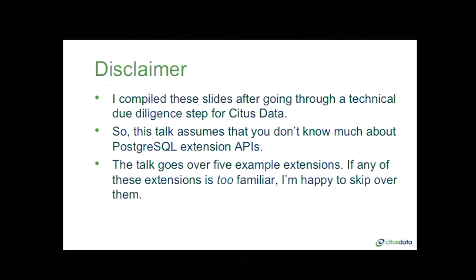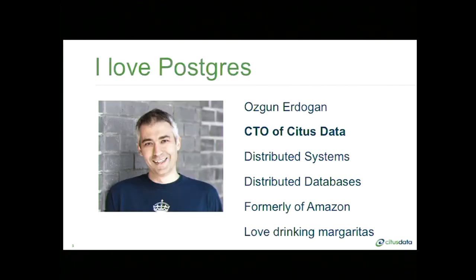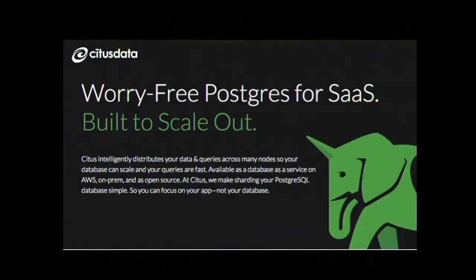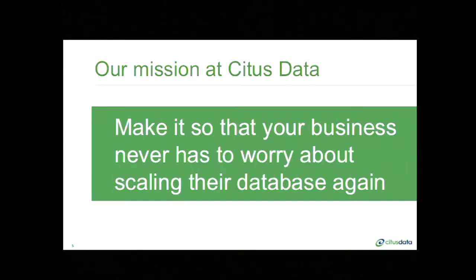Just setting the context and the background on this slide deck. I'm Özgün, the CTO at Citus Data. Previously I worked in the distributed systems engineering team at Amazon.com. I love Postgres. Our team also loves Postgres. At Citus Data, we focus on scaling out Postgres SQL and making sharding simple, so you can focus on your application and not your database. Every engineer on our team shares the mission to make it so you never have to worry about scaling your database again — and we do this by using something unique to Postgres called the extension APIs.